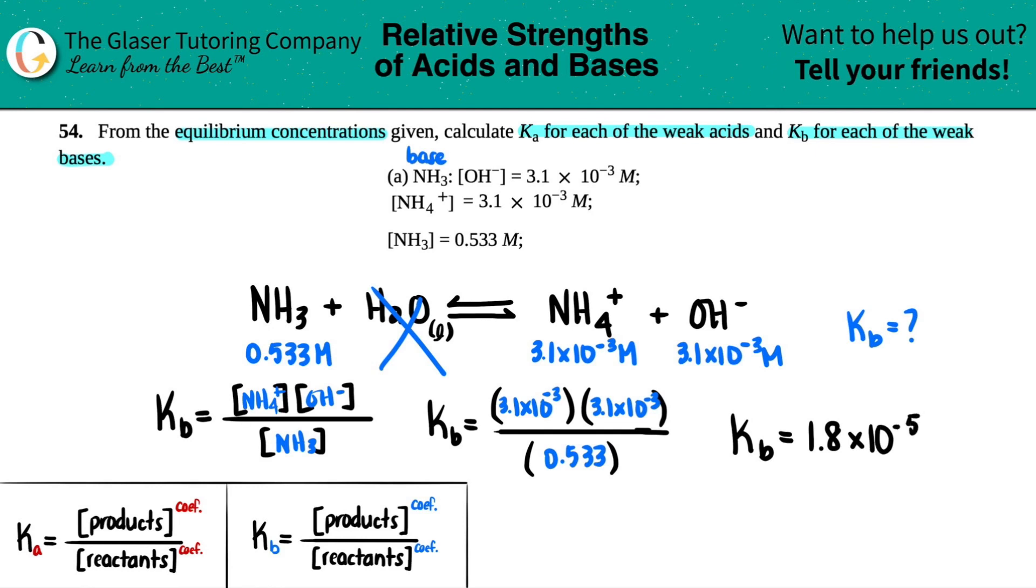That is the Kb value, and it is pretty small, which means that at equilibrium you should have most of your weak base. Weak bases or weak acids do not like to dissociate - these ions are much less than what you started with, and that's what makes a weak acid or weak base.